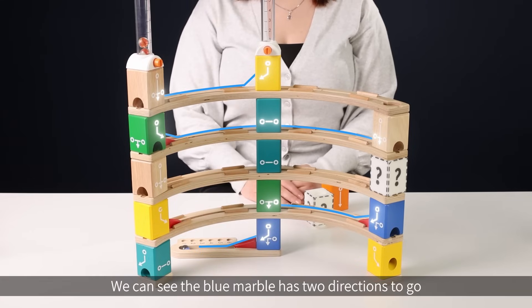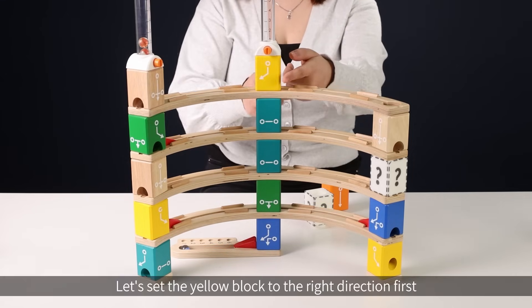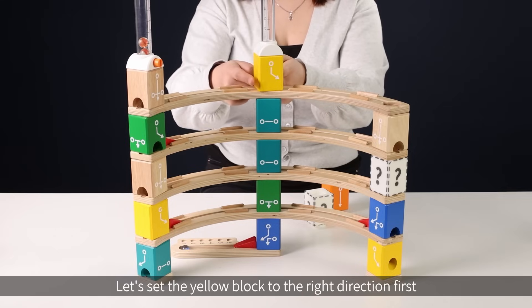We can see the blue marble has two directions to go, right or left. Both ways can make it go to the fourth level. Let's set the yellow block to the right direction first.